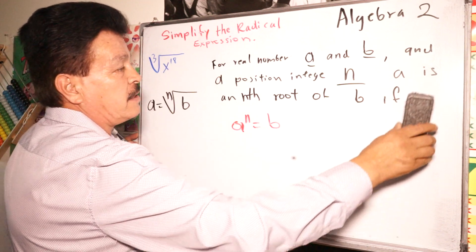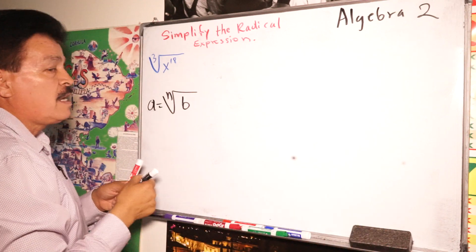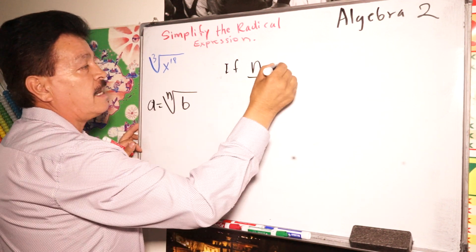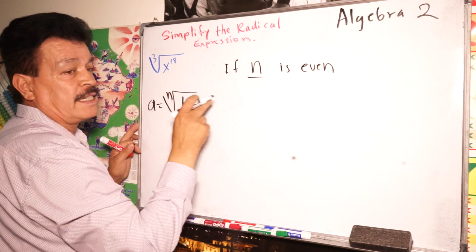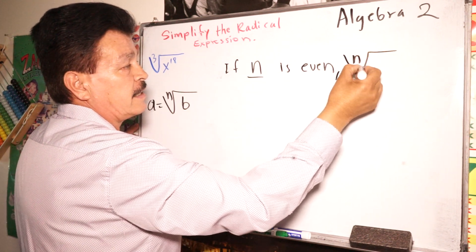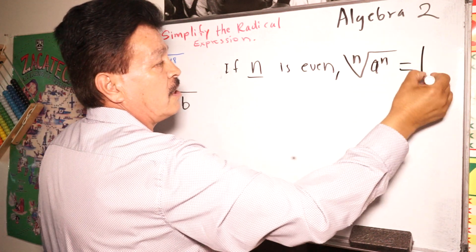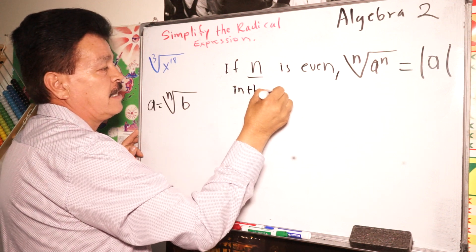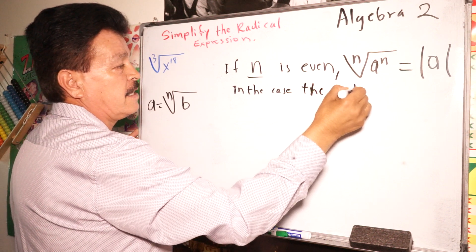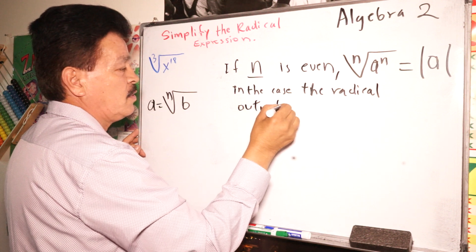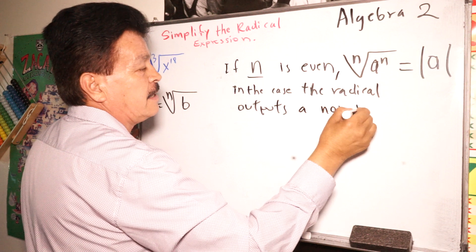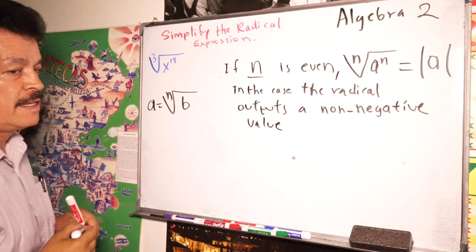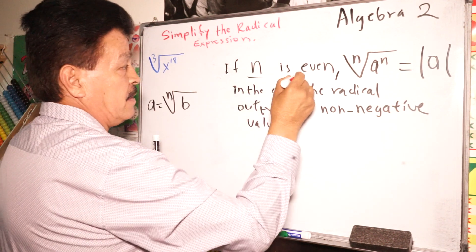Another idea: if n — the index — is even, then the nth root of a to the n equals the absolute value of a. This ensures a non-negative value in the output.